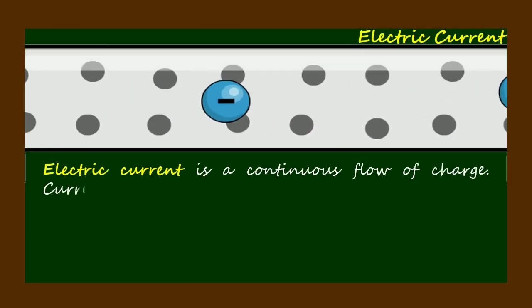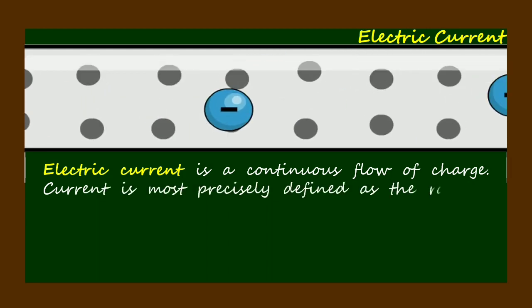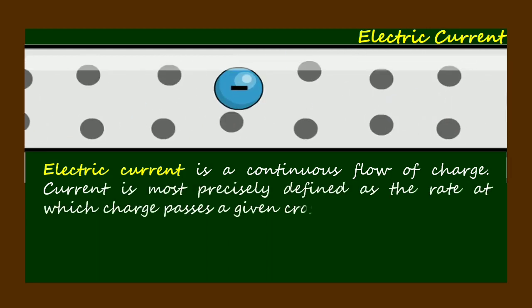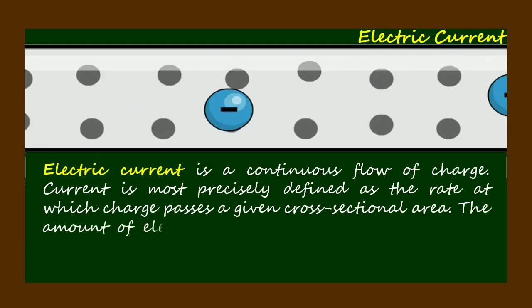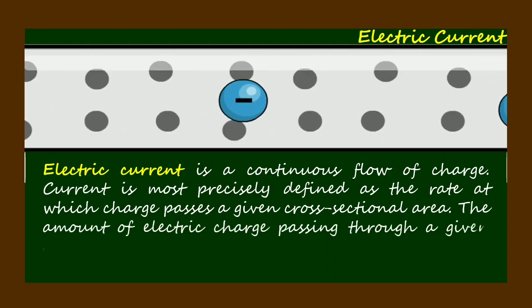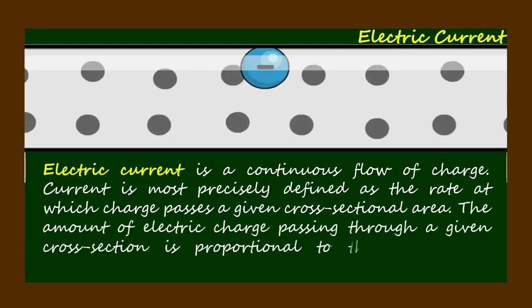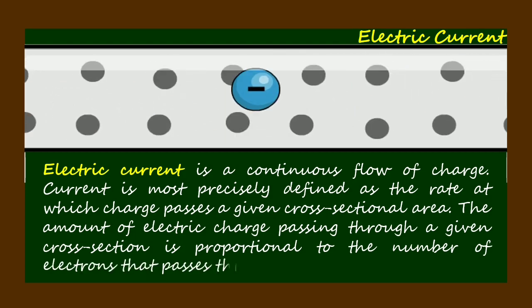Electric current is a continuous flow of charge. Current is most precisely defined as the rate at which charge passes a given cross-sectional area. The amount of electric charge passing through a given cross-section is proportional to the number of electrons that passes through it each second.